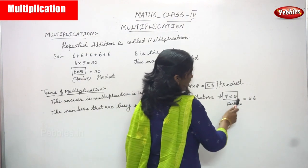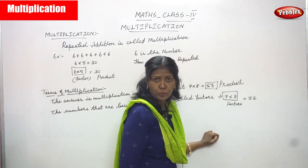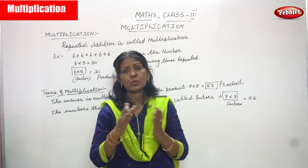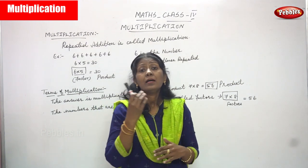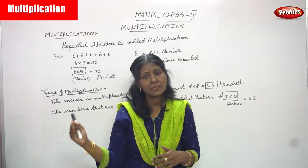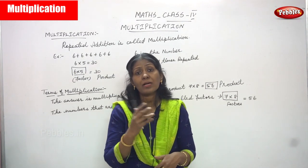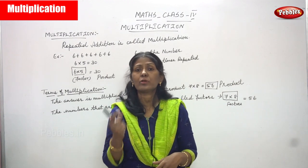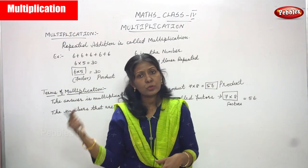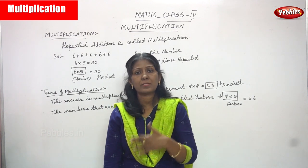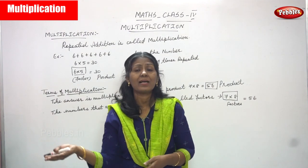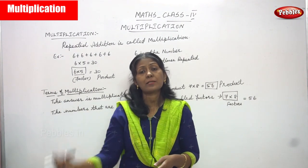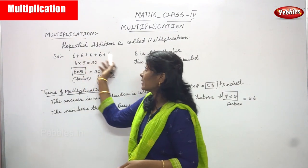So 7 into 8 is a factor and 56 is a product. Another example: 6 into 5 is a factor and 30 is a product. 8 into 4 — the two numbers 8 and 4 are factors and the answer 32 is a product. 2 into 6 gives the answer 12, so 2 into 6 is a factor and 12 is a product.